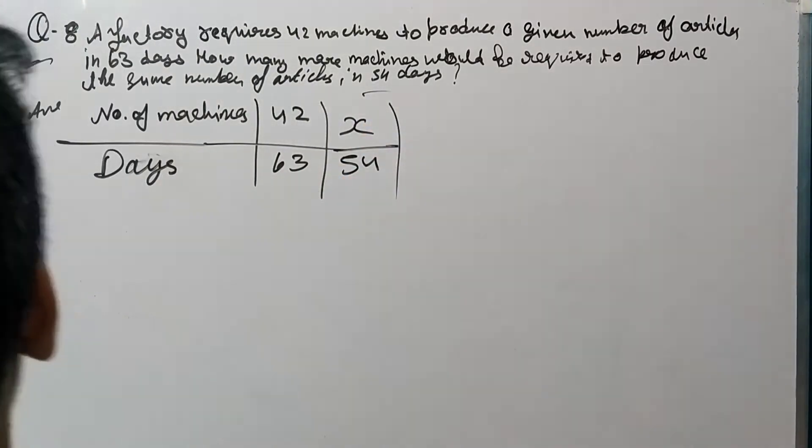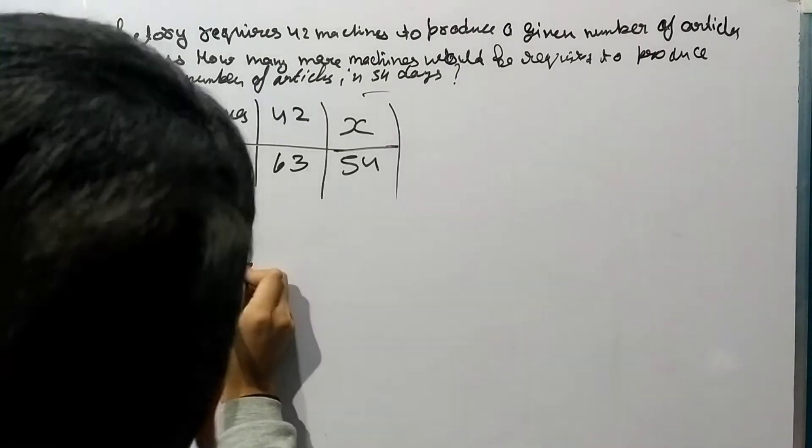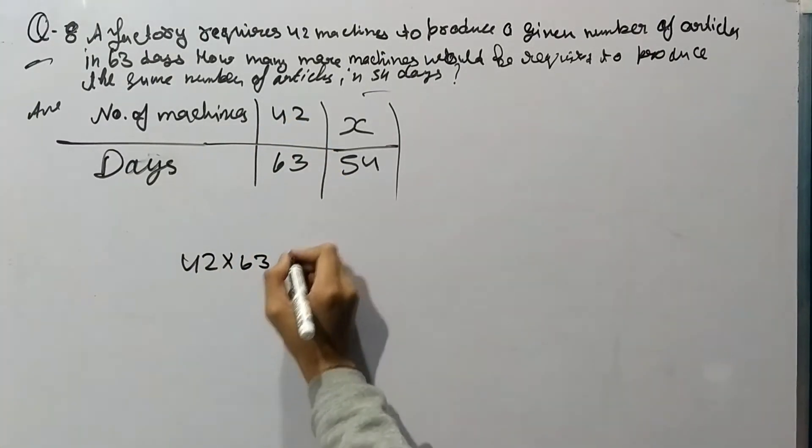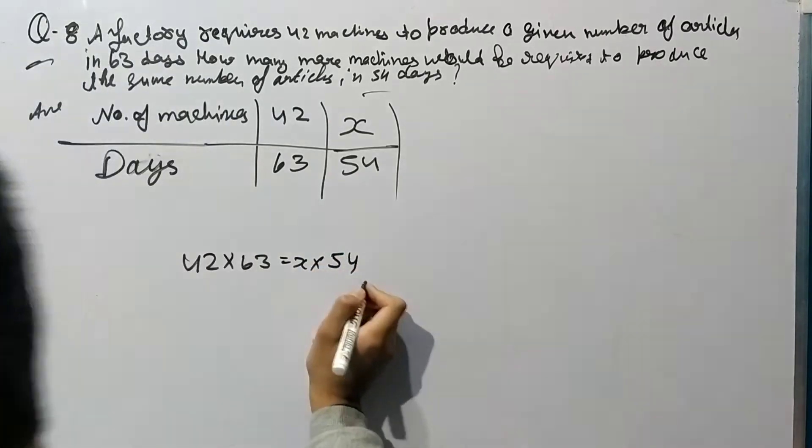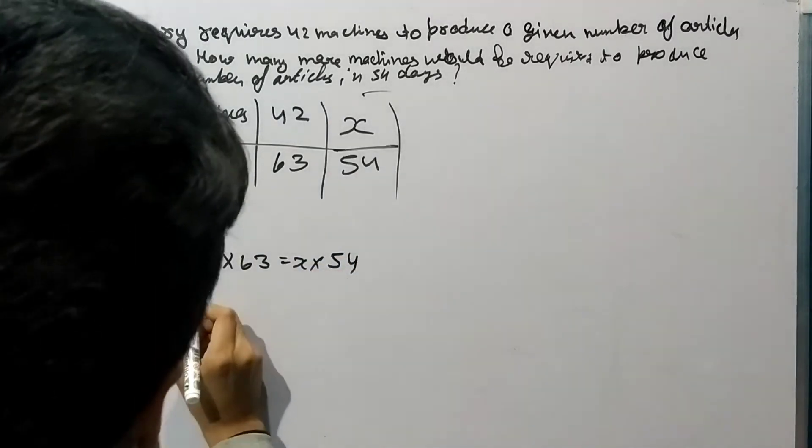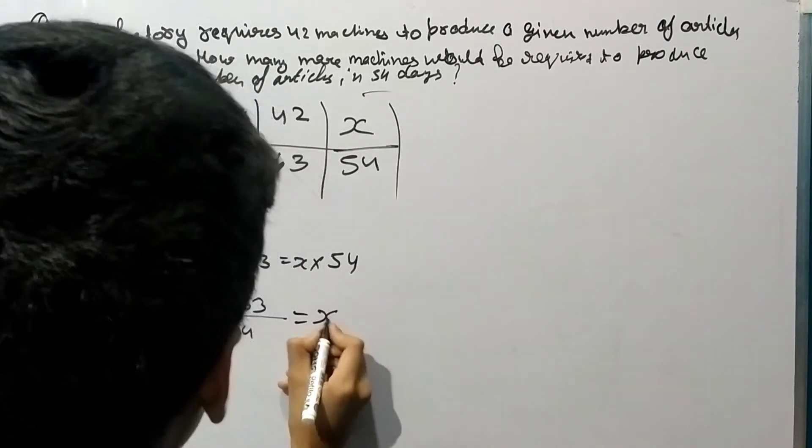So let's multiply: 42 by 63 is equal to x by 54. Then 42 by 63 upon 54 is equal to x.